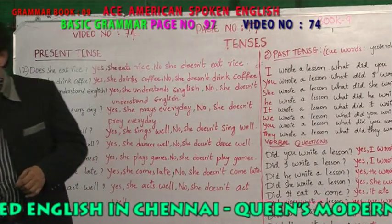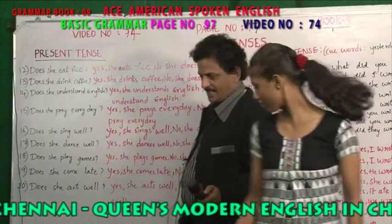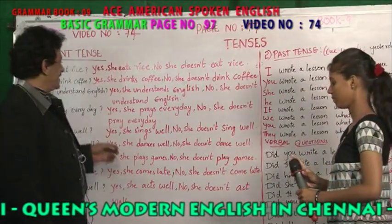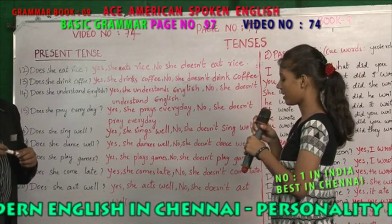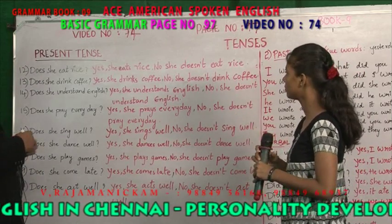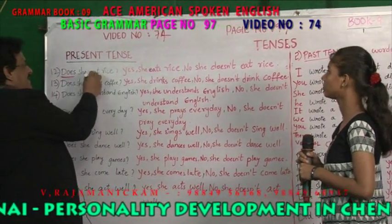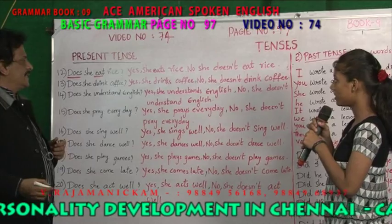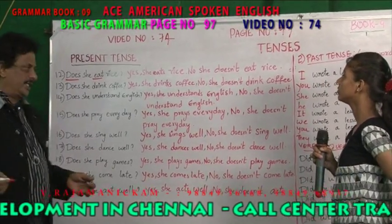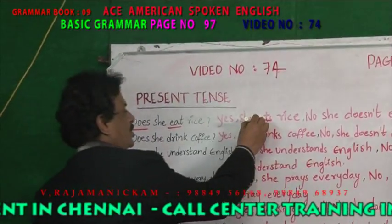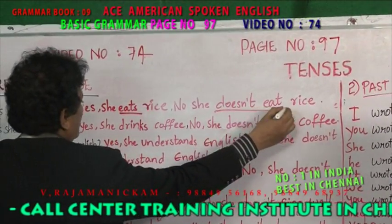I request the young lady to come forward. Take your mic. The question given here is: does she eat rice? So doesn't eat is the present tense form. The answer: yes, she eats rice. For yes or no questions, it has to be either positive or negative. Yes, she eats rice. No, she doesn't eat rice.